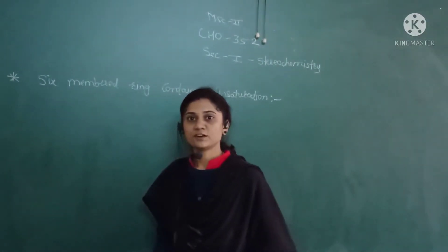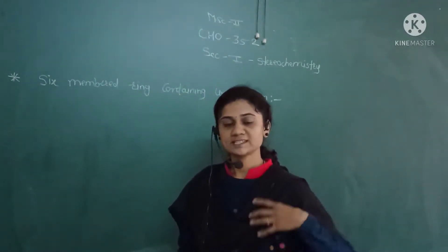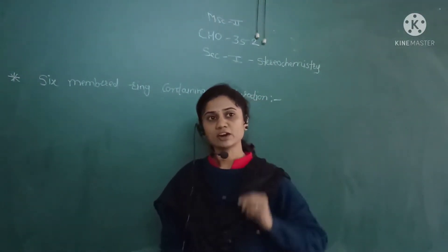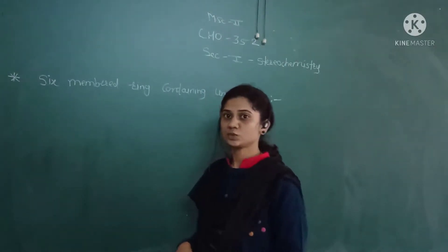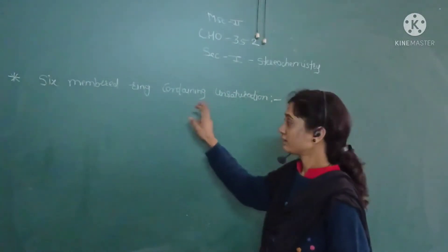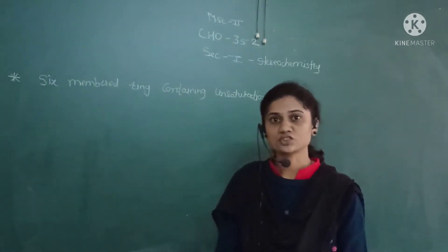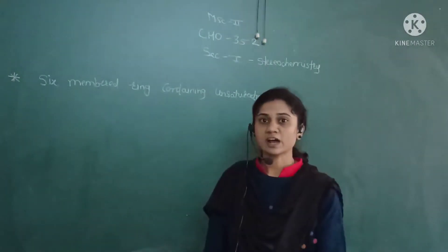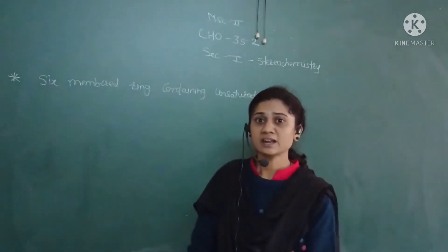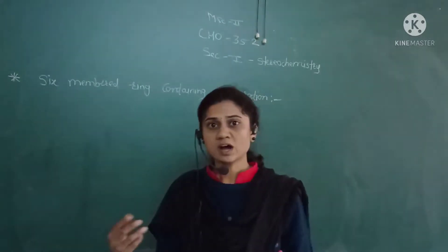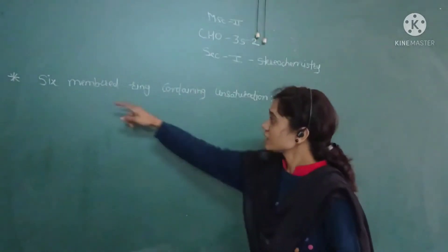Hello, good morning students. In the last lecture we discussed pyrolytic elimination reactions. Today I'm going to teach you about a six-membered ring containing unsaturation. Unsaturation means there is a presence of a carbon-carbon double bond, which means the carbon will get sp2 hybridized.